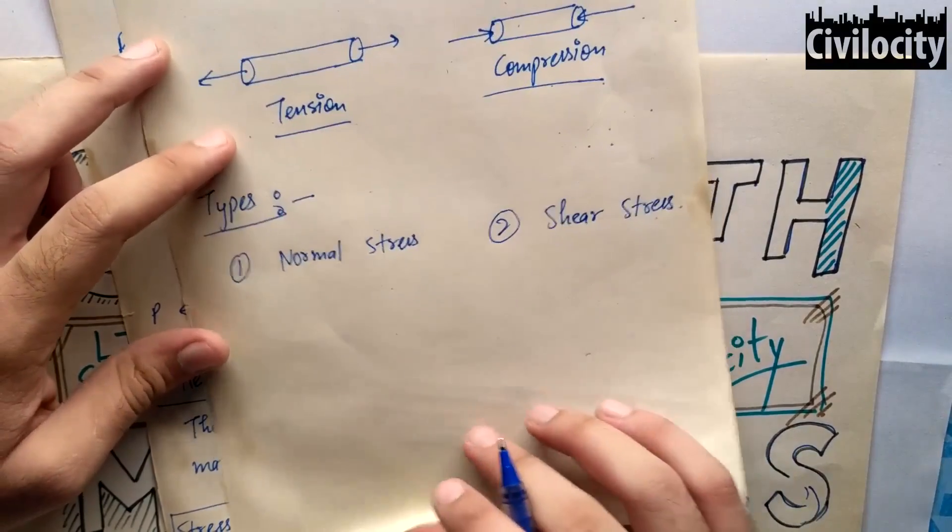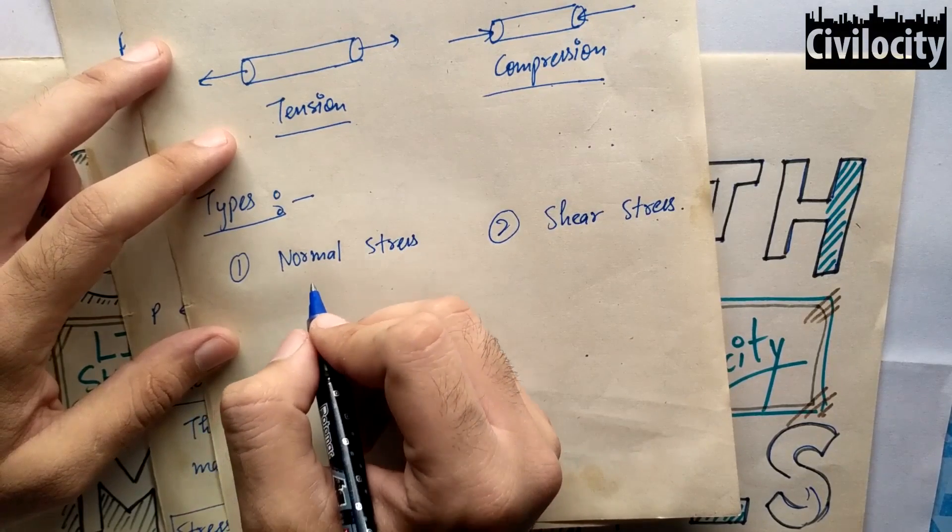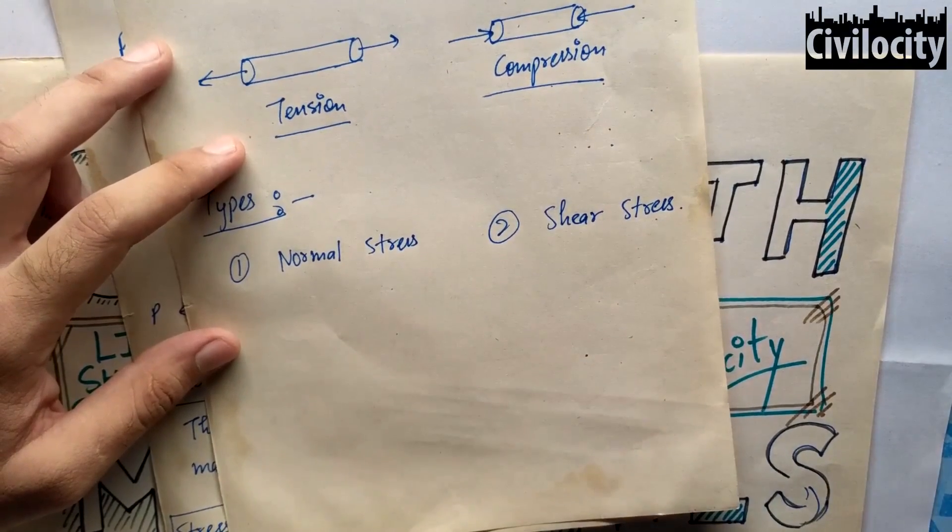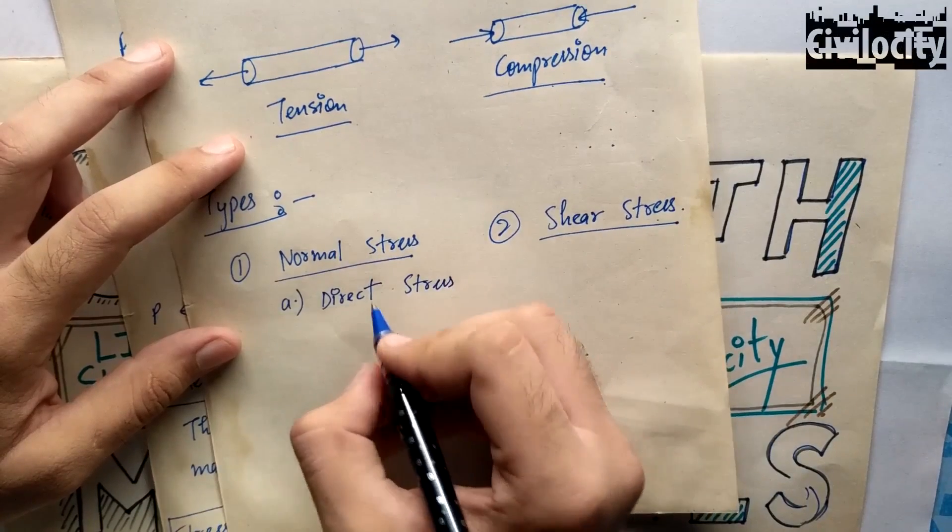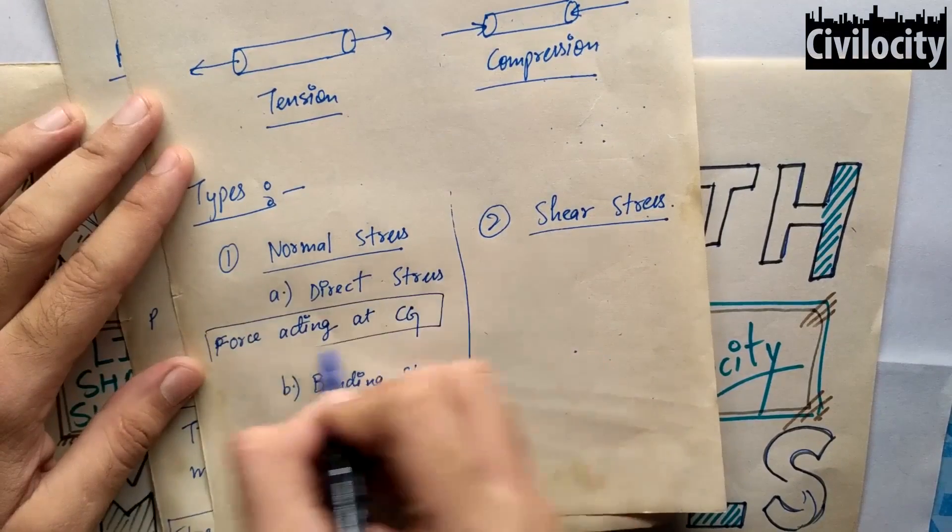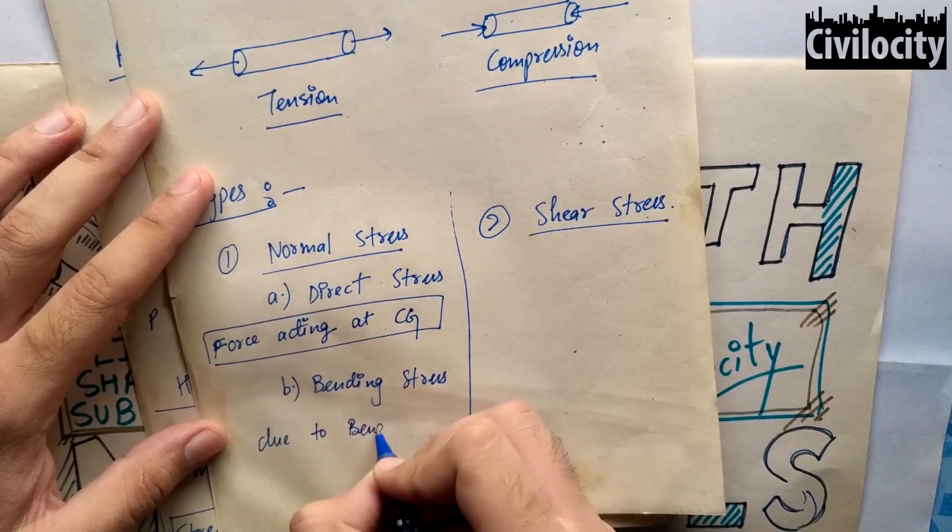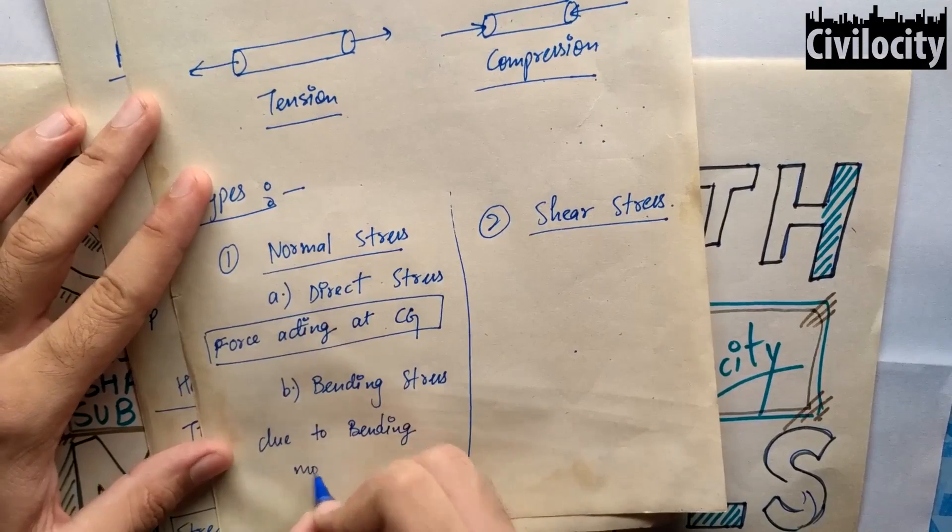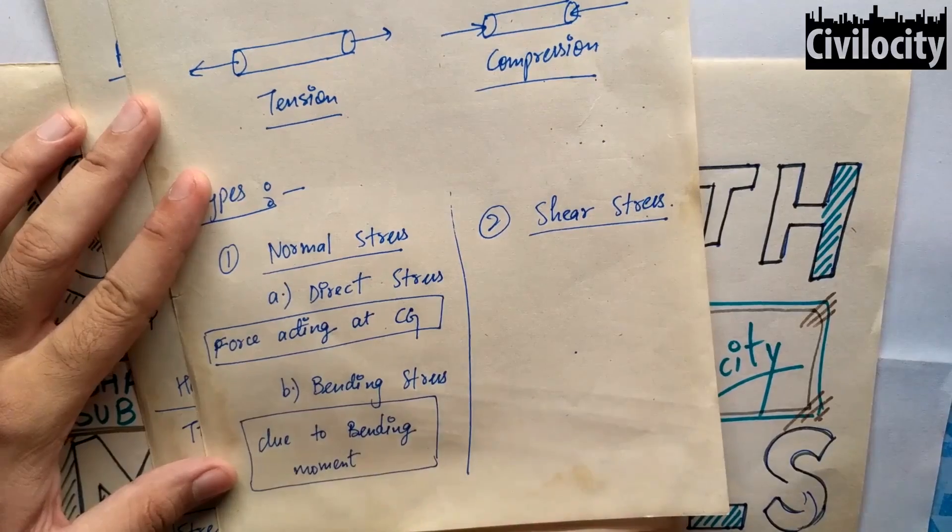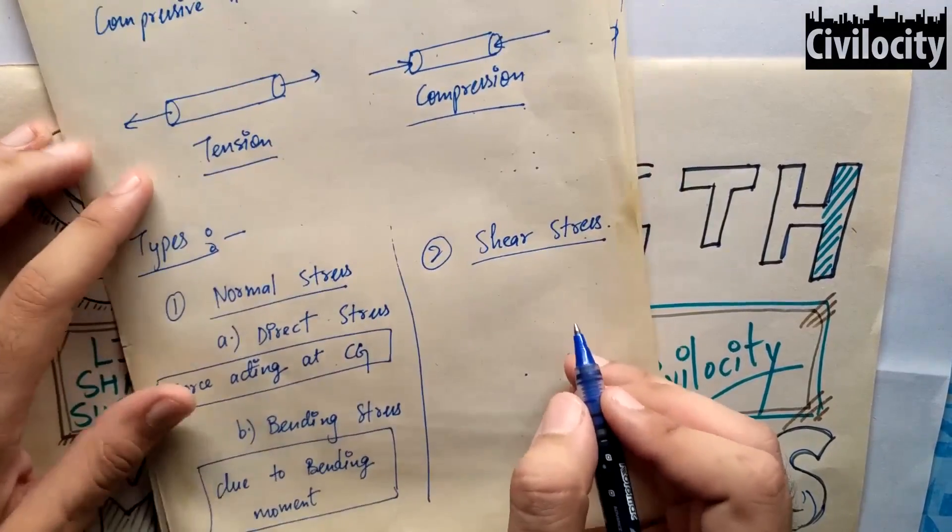Normal stress is always normal to the cross-section, and shear stress is resistance offered by material against shearing force. Normal stress is divided into two parts: direct stress or axial stresses, and bending stresses. Direct stresses are produced when axial force acts at center of gravity of cross-section, and for prismatic bodies they are uniform across the cross-section. Bending stresses are produced by bending moment. Right now, let's not go deeper into these terms, and we will discuss them in depth later on.